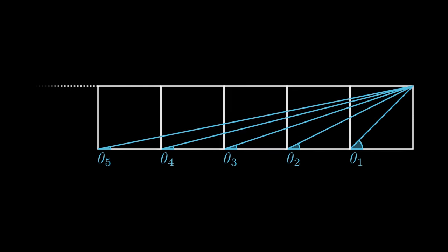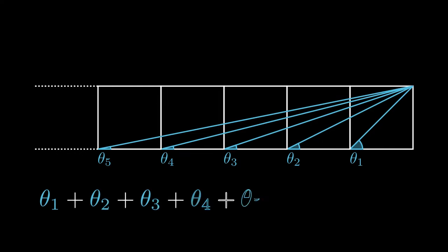If we were to add up all of the angles theta 1, theta 2, theta 3, so on and so forth, what is the total sum of these angles? Pause this video if you'd like to try it out for yourself, and when you're ready, unpause for the solution.